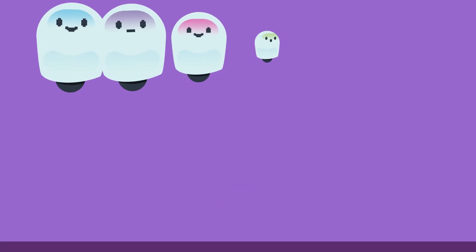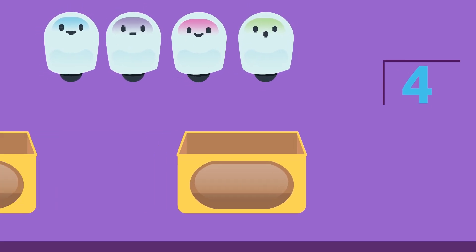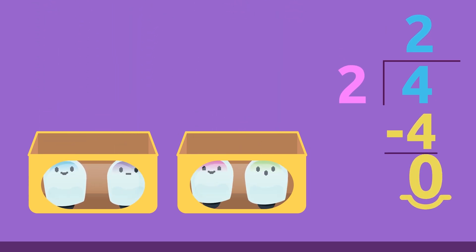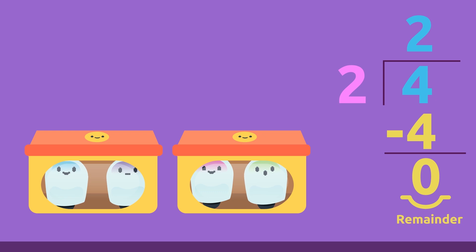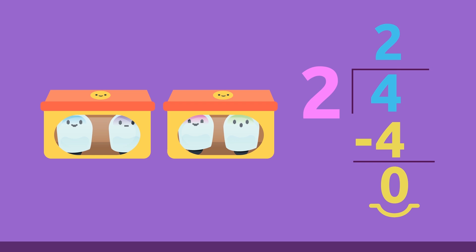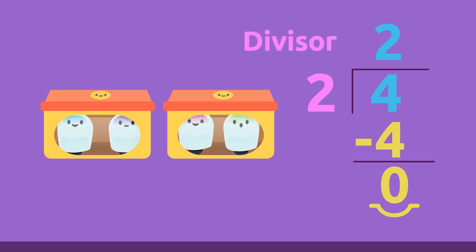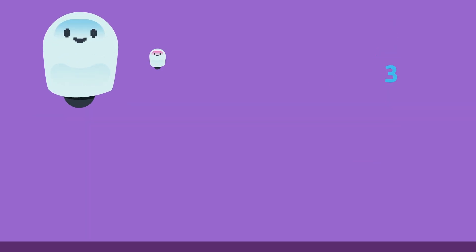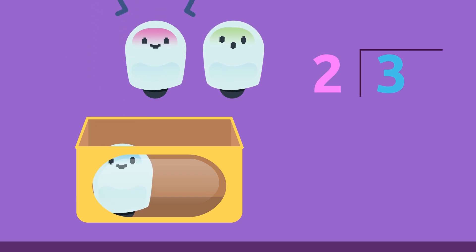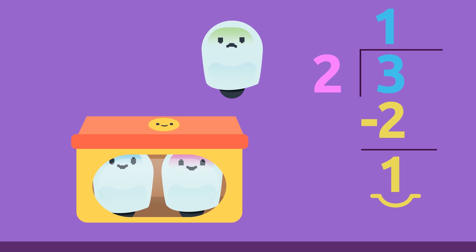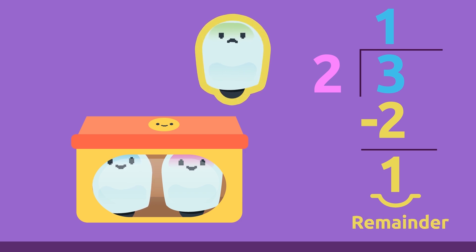For example, if we have four robots and we want to put two in each box, there won't be any left over because the remainder of the division is zero. So four is divisible by two and the number two is its divisor. For example, the number three isn't divisible by two because if we divide three by two, the remainder isn't zero — the remainder is one.